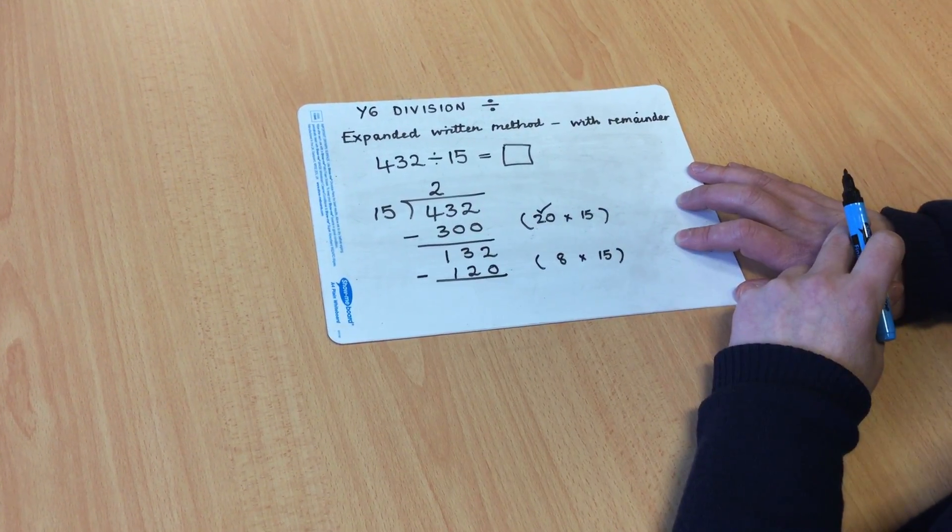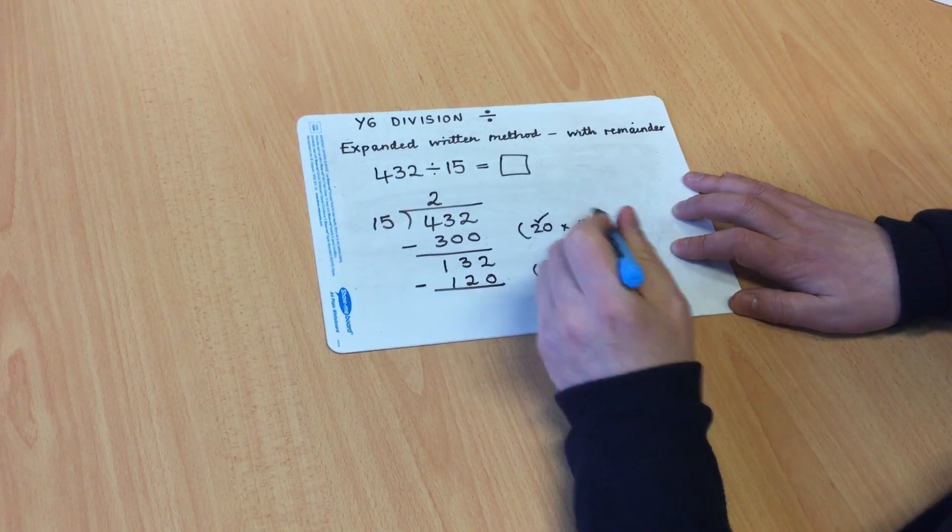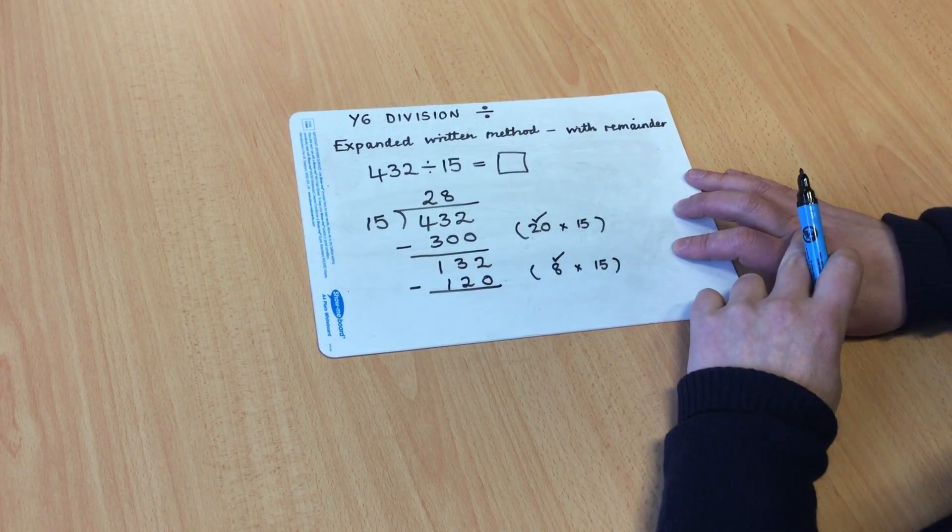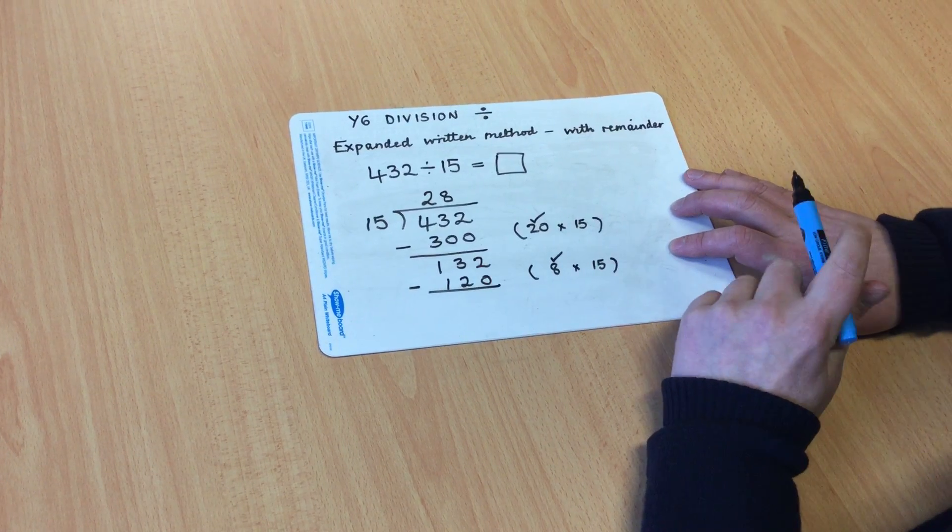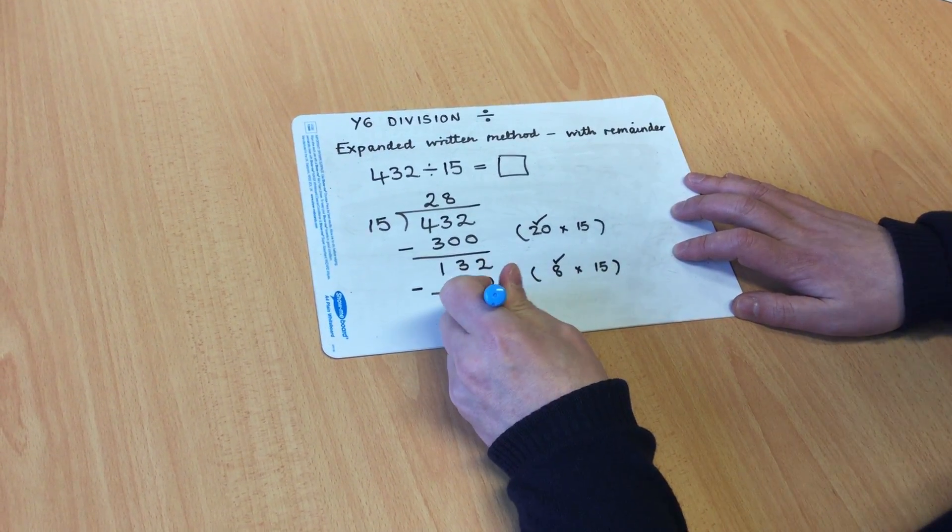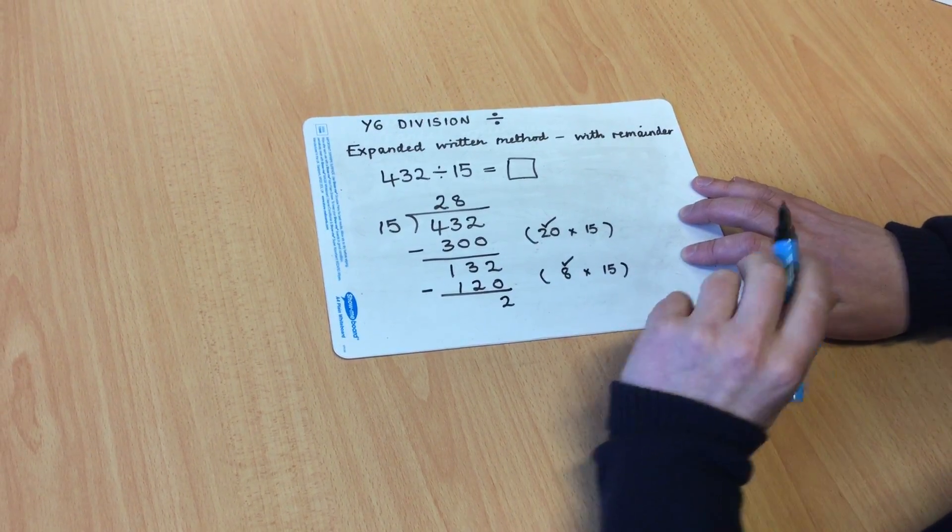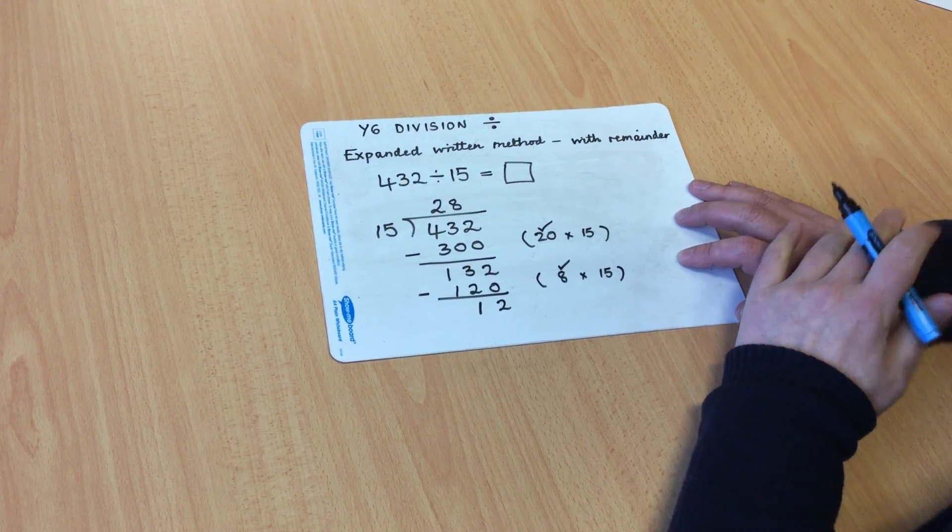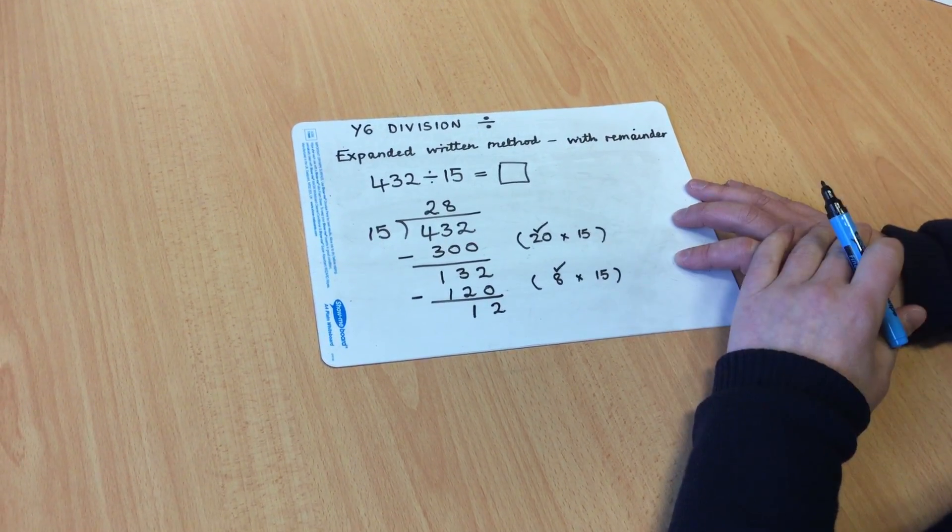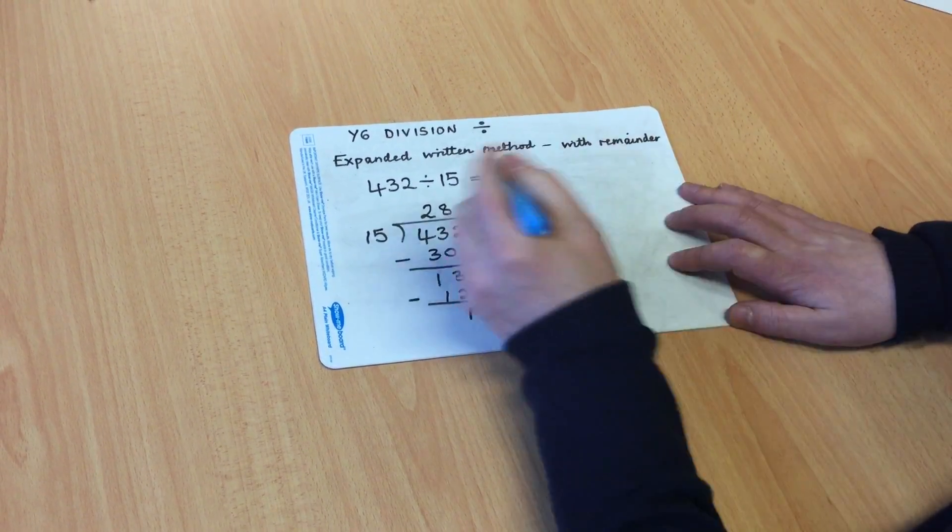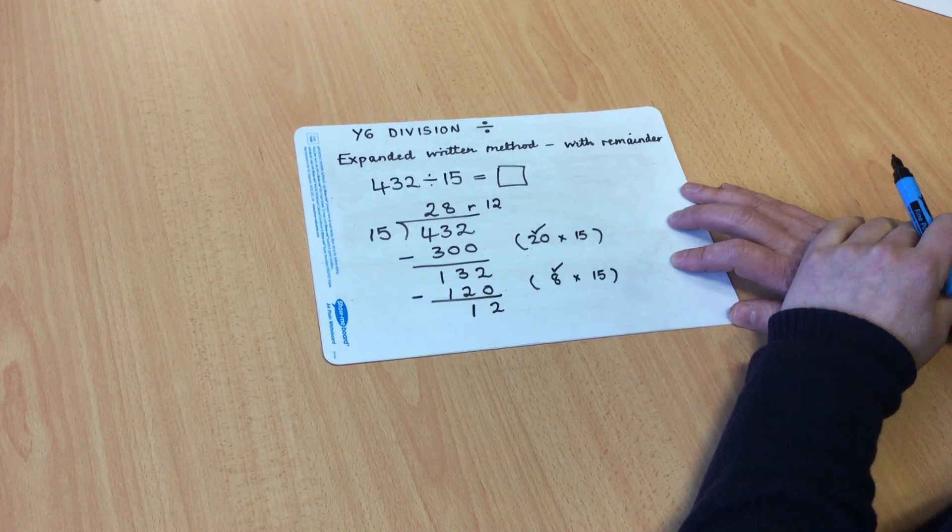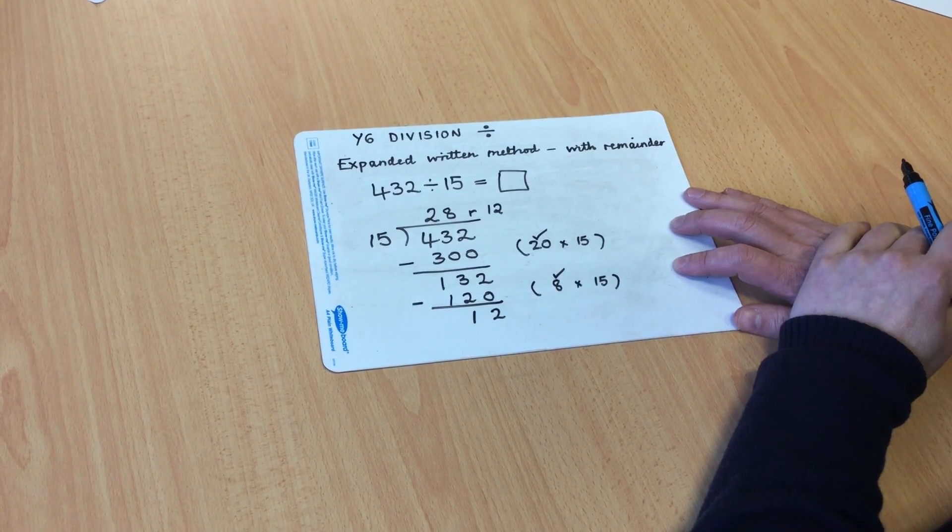Before I find the difference this time, I'm going to record the 8 in the units column, and then find the difference between 132 and 120 by another column subtraction. 2 subtract 0 is 2, 3 subtract 2 is 1. So I have a remainder of 12. I know that 15 doesn't go into 12, so I'm going to record my remainder at the top. And it provides me with the answer, 28 remainder 12.